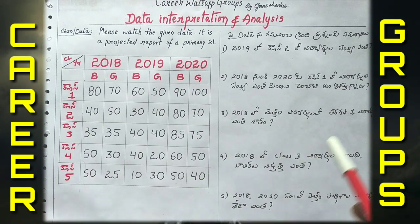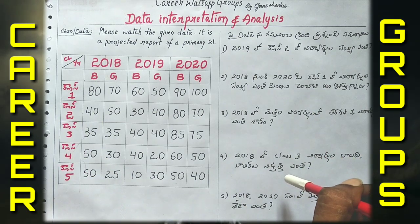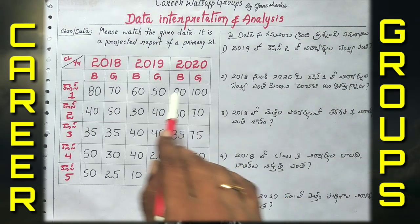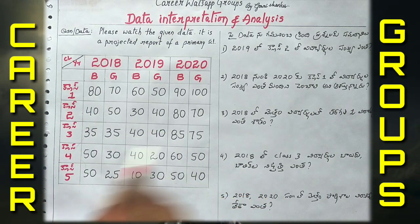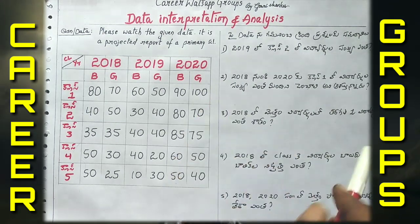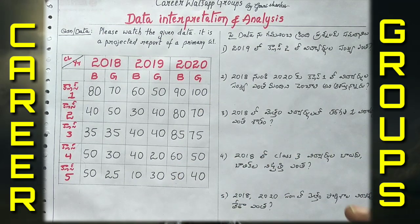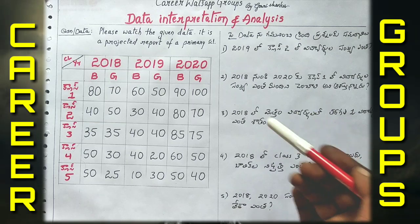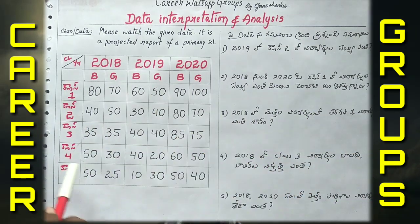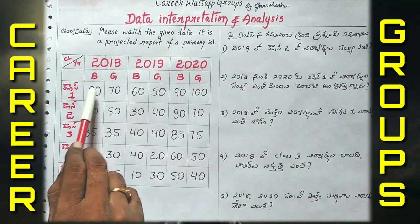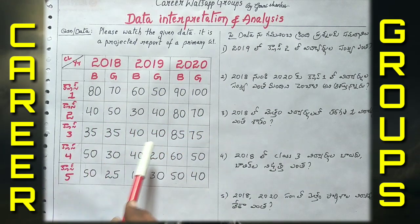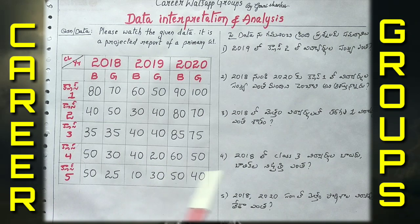Now what we have to do is work through the first question. We will read the data: Class 1, Class 2, Class 3, Class 4, Class 5 — each has boys and girls data. For example, 20, 20, 20 and so on.